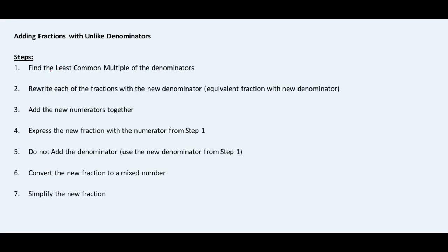The process is: first, find the least common multiple. Then rewrite each of the fractions with the new denominator — so the least common multiple becomes the new denominator. We'll add the numerators together and then express the new fraction as a mixed number. So let's go ahead and get started.